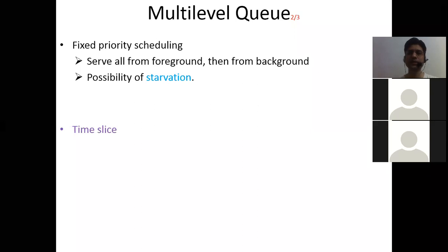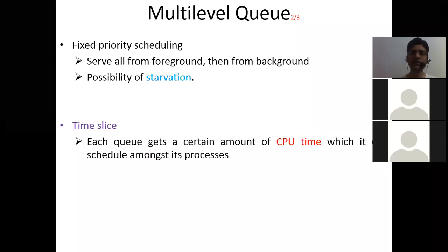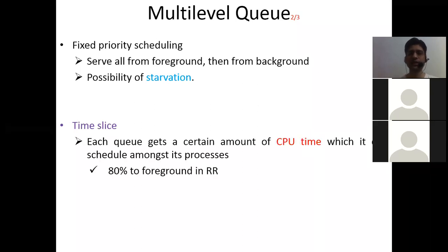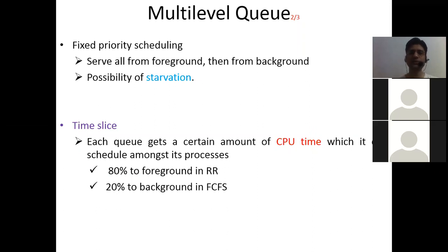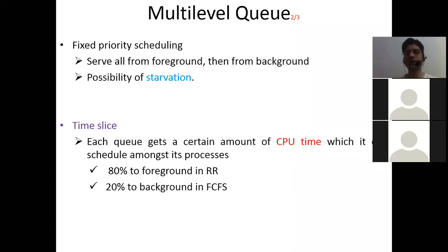So there is another idea of time slice — they give a fixed time slice of CPU: 80% to the foreground in round-robin manner, and 20% to the background in FCFS manner. They try to give 80% of time for interactive process execution and 20% for background process execution. But still, there is not enough flexibility — you cannot go beyond 20% if the background process required more time, it just has to wait.